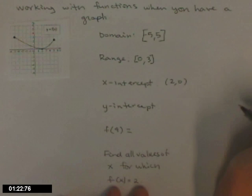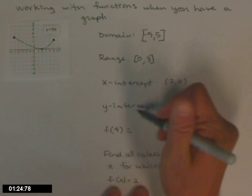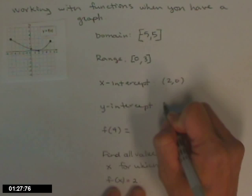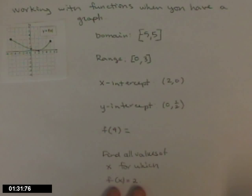Where does your graph cross the y-axis for the y-intercept? That would be that point right there, we'll estimate that at 1 half. It's a point, so I'll write it as a point, 0 comma 1 half.